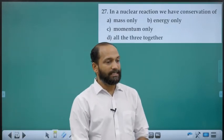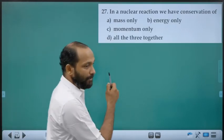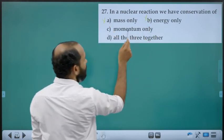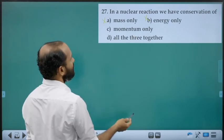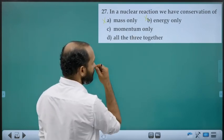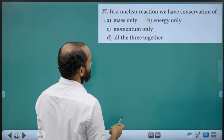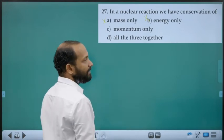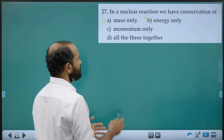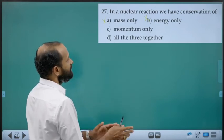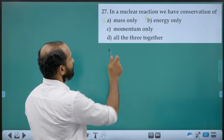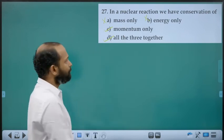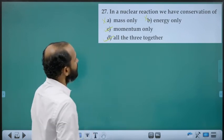Twenty-seventh question: In nuclear reactions, mass alone is not conserved, and energy alone is not conserved. But mass and energy together are conserved (Einstein's E = Δmc²). Momentum is also conserved. All three together are conserved, so we opt for option D.